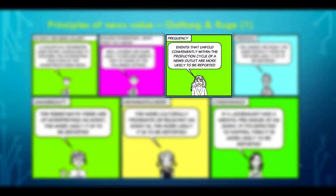The first criterion is frequency. Events that unfold conveniently between the production cycle of a news outlet are more likely to be reported. That is, if something happens when journalists are on duty, it will be reported. But if something happens in the middle of the night, or in the middle of the desert where there are no journalists, most probably the coverage will be much less, or there won't be any coverage.